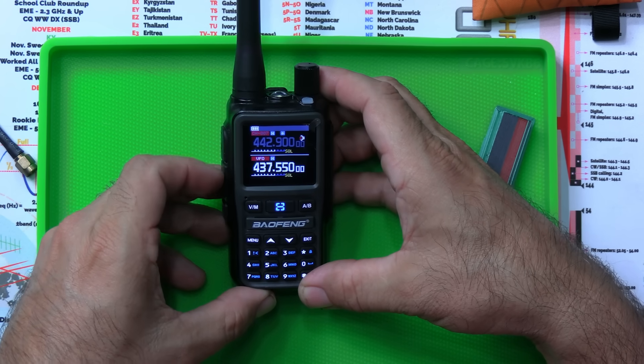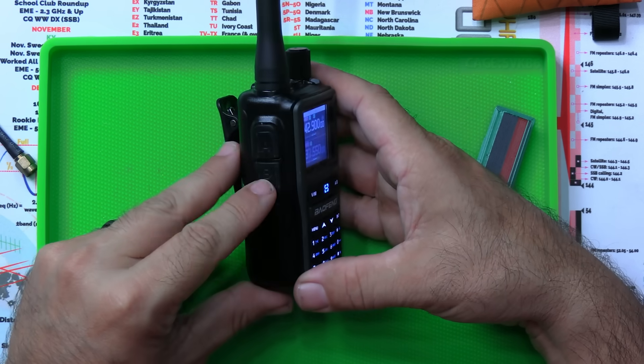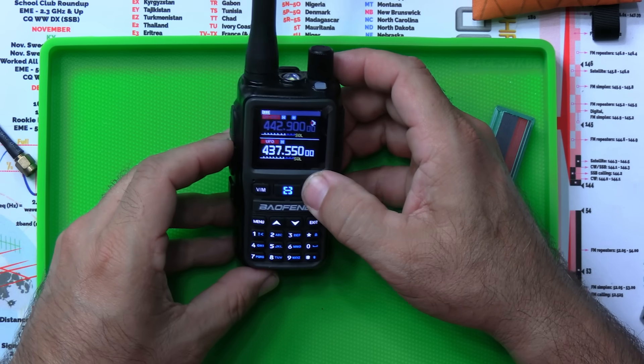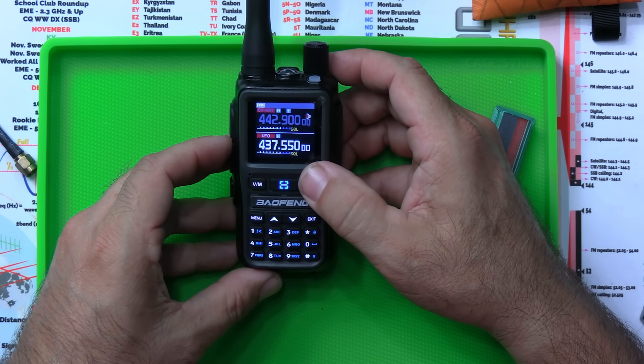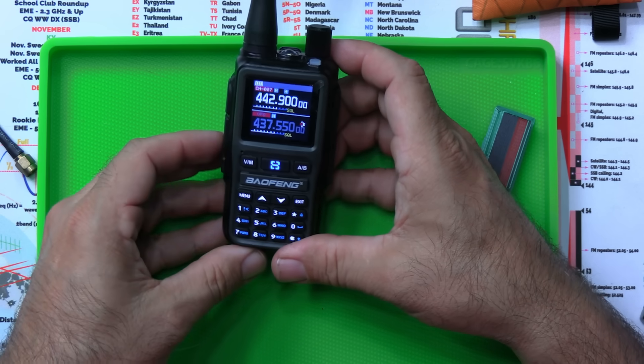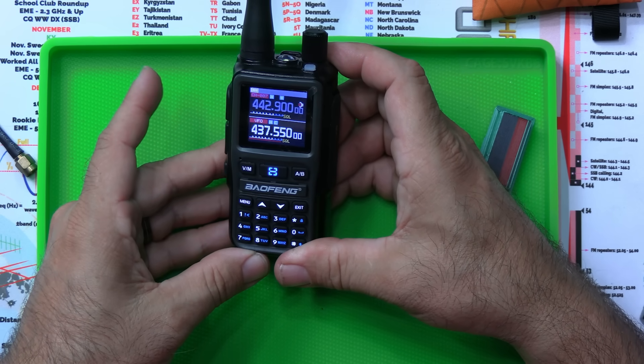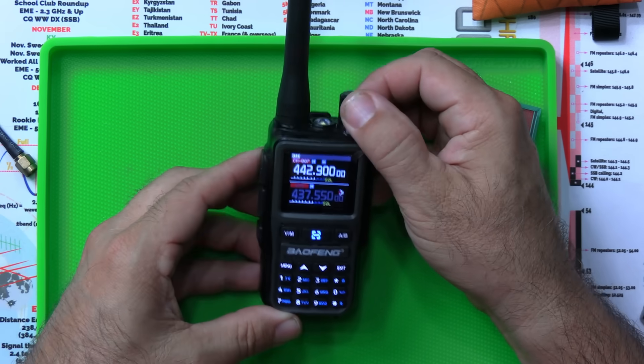This right here is my, and another thing, it's dual PTT. A and B right there, you can see. So I can select the top and the bottom band with the A, B button right there. But if I wanted to key up the bottom band, I just hit the B PTT button. And it keys that band right there.